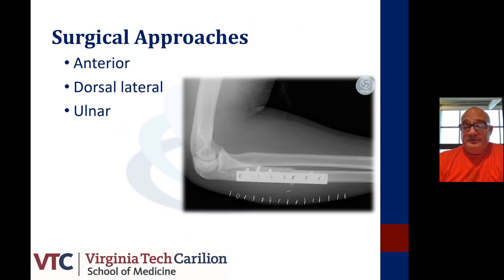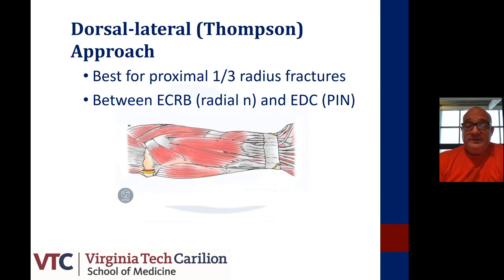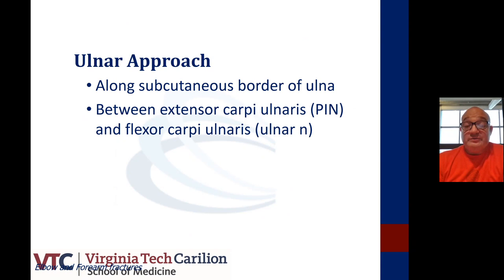The anterior Henry approach is best for distal and middle third fractures. It's in the proximal interval plane between the brachioradialis and the pronator teres, and distally between the brachioradialis and the FCR tendon. The dorsolateral Thompson approach is best for proximal third fractures, between the ECRB and EDC plane. The Boyd approach for the ulna is along the subcutaneous border of the ulna, between the ECU and the FCU.